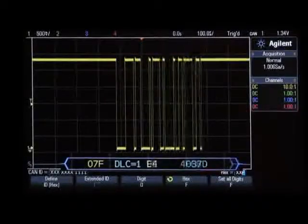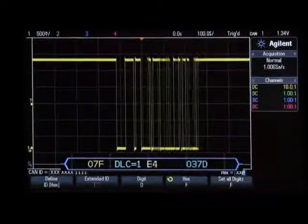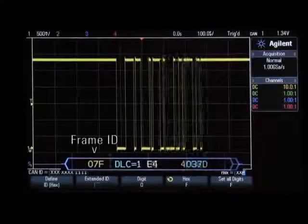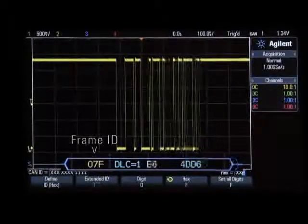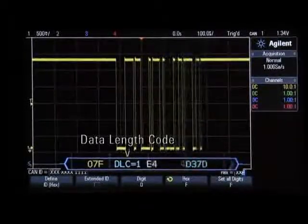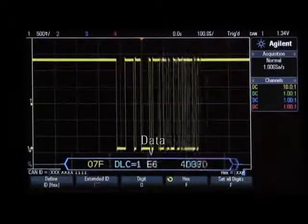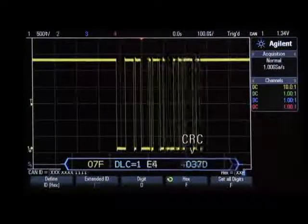What you see below the waveform is the time correlated decode trace. This particular data frame has a frame ID of 07F, followed by a data length code, followed by one byte of data, and finally followed by the CRC.